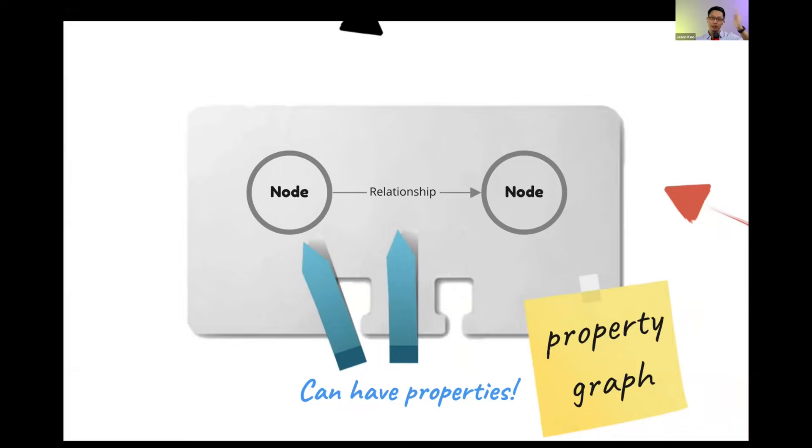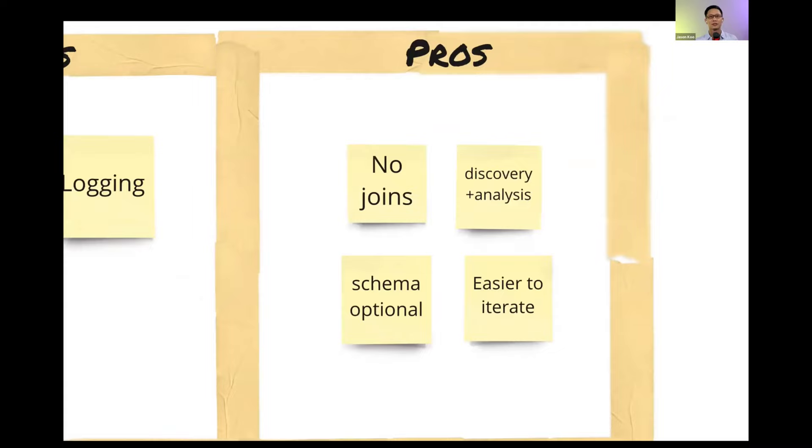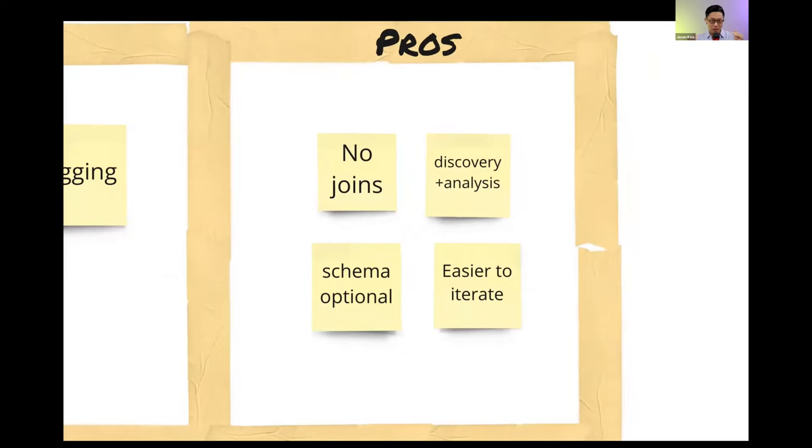So now that we know why a good number of folks would be interested in graph technologies, what exactly is a graph database? How does it work? What does it look like? In general, graph databases is one of four broad categories of no SQL databases. The others being document, key value stores, column family. And here I've put up a few examples, major names like MongoDB, Redis, Snowflake. These are all other no SQL options.